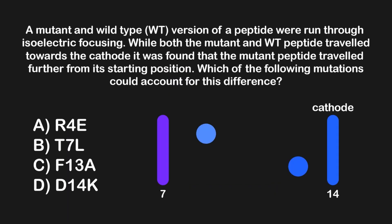A mutant and wild type version of a peptide were run through isoelectric focusing. While both the mutant and wild type peptide traveled towards the cathode, it was found that the mutant peptide traveled further from its starting position. Which of the following mutations could account for this difference? Let's begin by breaking this question down a bit and put it into the context of what we just learned.